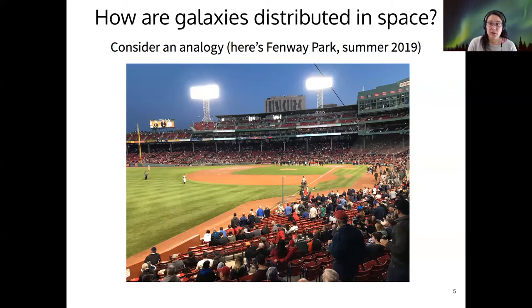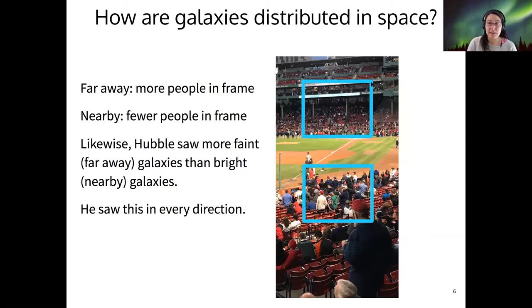Let's assume that we wanted to map out the location of people in the stadium the same way that we want to map out the location of galaxies in the sky. If we take two snapshots that are the same area, then we would actually see fewer people in the frame nearby, but many more fill up the frame when they're far away.